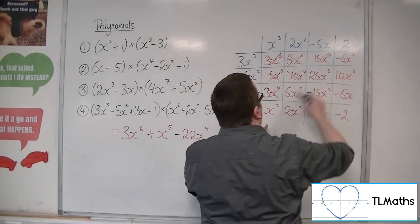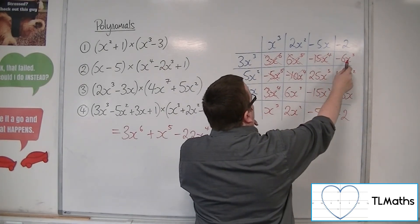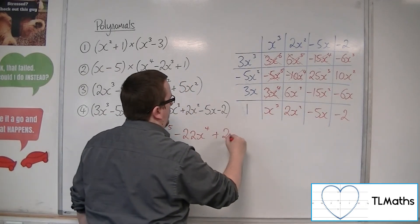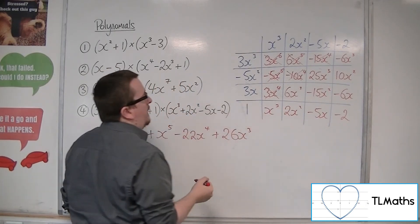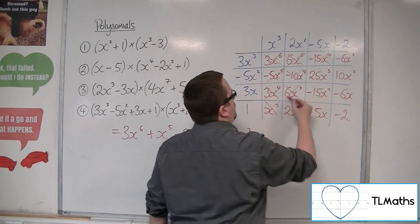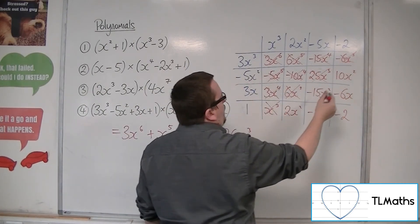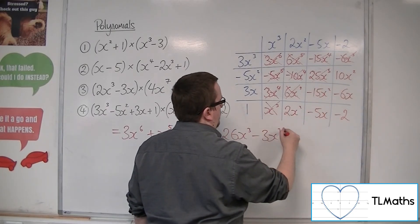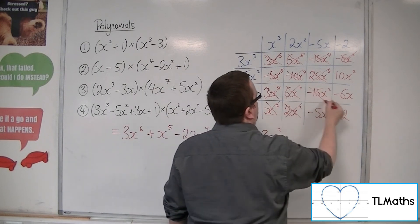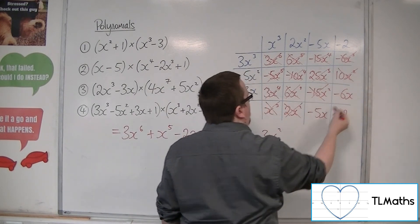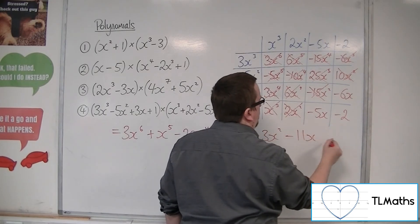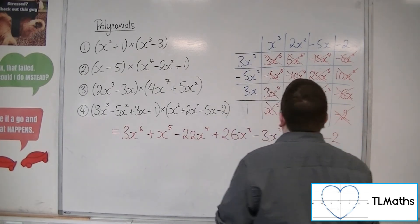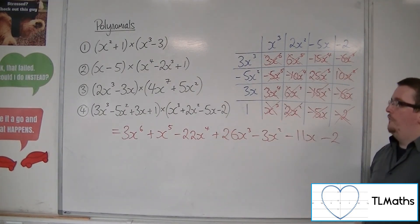For the cubes, we've got minus 6 and plus 6, so they cancel, and 25 and 1 gives 26x cubed. Then for the squared terms: 10, minus 15 gives minus 5, plus 2 gives minus 3x squared. Then we've got minus 6x take away 5x, so minus 11x. And then finally the minus 2 on the end. And that is the expansion of number 4.